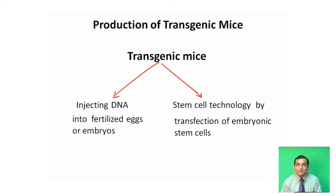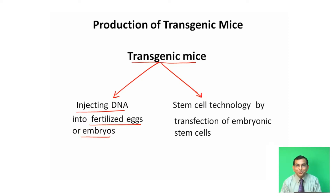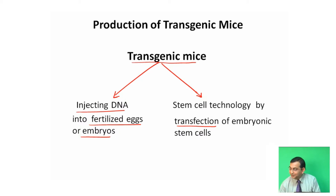Production of transgenic mice — how can it be produced? Transgenic mice can be produced by injecting DNA into fertilized eggs or embryos. It can also be produced by stem cell technology, also by transfection of embryonic stem cells.